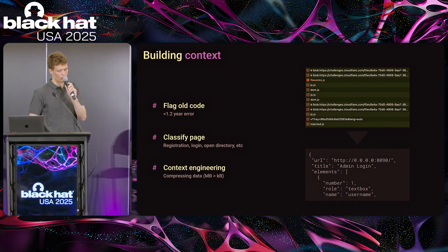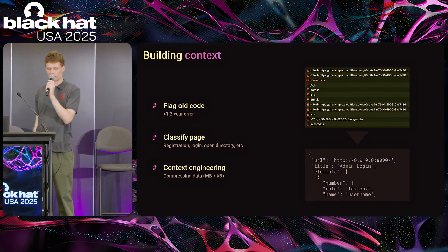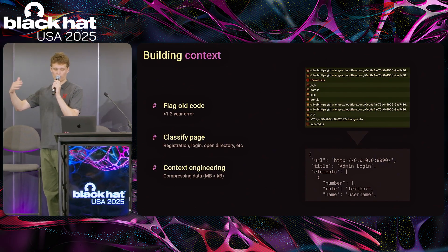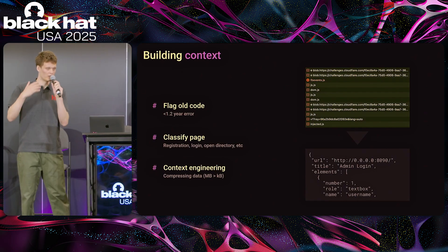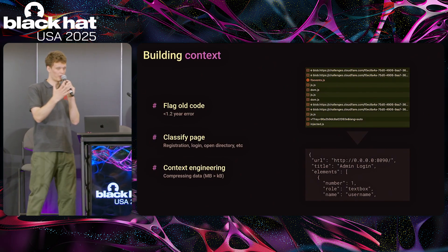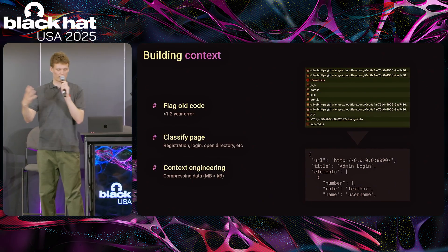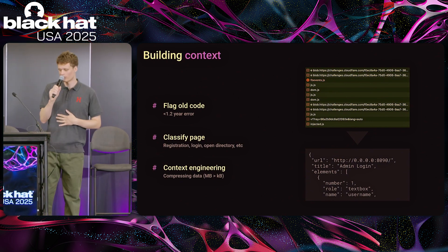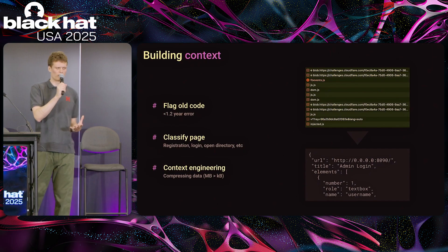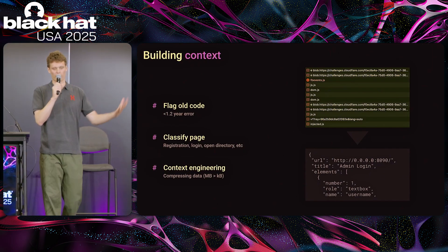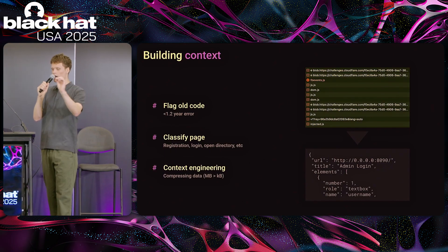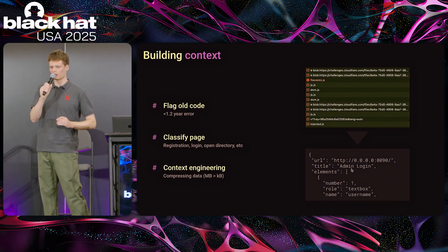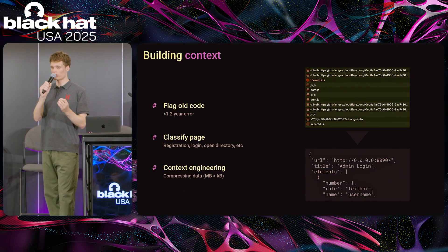In the planning step, we're building context about the web applications we found. Some of the things we do are flagging old code — we have our own model that can predict the age of a web page to within 1.2 years. We also classify these web pages: is it a registration, a login, perhaps a shopping cart? The way we do this is through context engineering, which is very important for our AI team. The gist is compressing lots of data — when you access a web page you're getting megabytes, but not all of it is relevant for hacking. We extract the most interesting parts — the title, text boxes — to feed into the LLM.